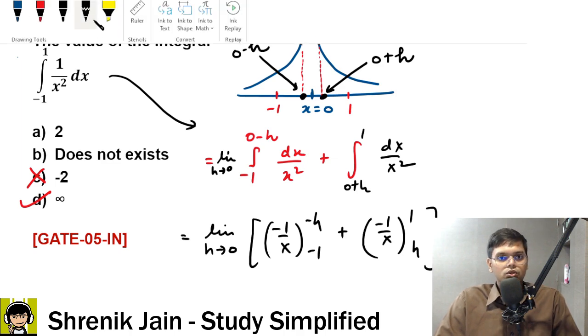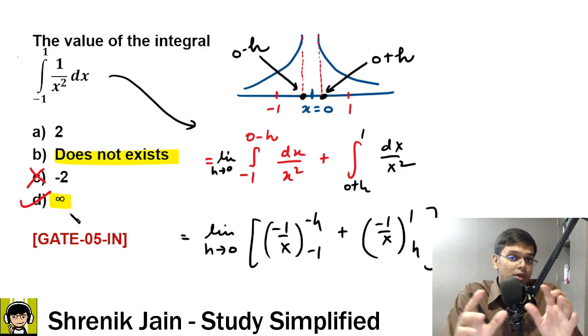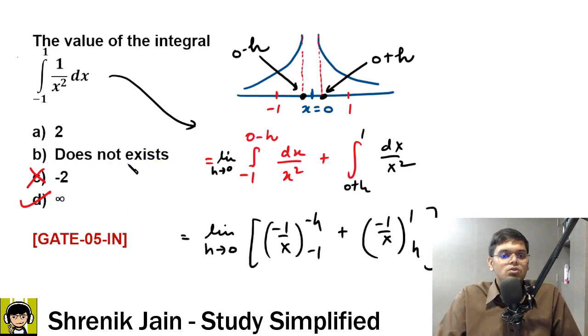Now you may also say 1 by 0 does not exist, but does not exist is a vague stuff. Vague stuff means it can be infinity or minus infinity. That does not exist is for both infinity or minus infinity. But we have infinity as a specific version also, so be very specific if specific versions are given, and therefore does not exist is not touched and infinity is touched, and we are saying D is the answer.